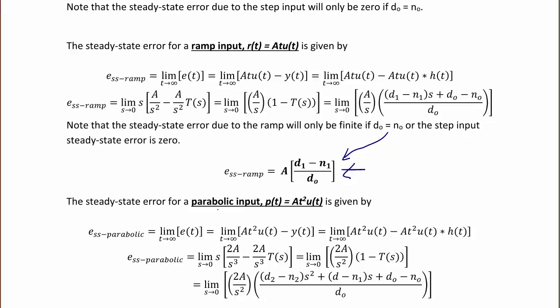The steady-state error for a parabolic input, p(t) = At^2 u(t), is given by the limit as t approaches infinity of e(t), where e(t) is At^2 u(t) minus At^2 u(t) convolved with h(t). Using the final value theorem again, this is the limit as s approaches 0 of 2A/s^2 times (d2 - n2)s^2 + (d1 - n1)s + d0 - n0.